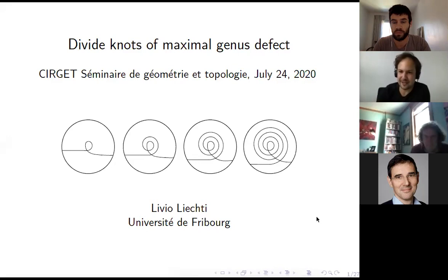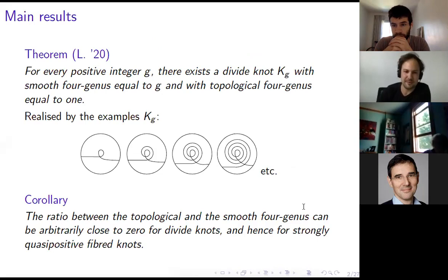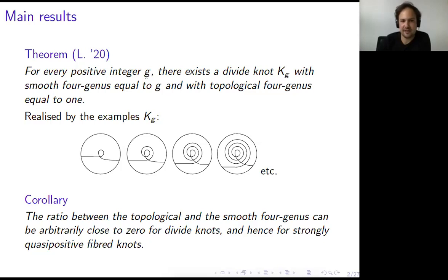The main result I want to talk about is the following. For every positive integer G, there exists a divide knot K_G whose smooth four-genus is equal to G and whose topological four-genus is equal to one. There are explicit examples which I will present.